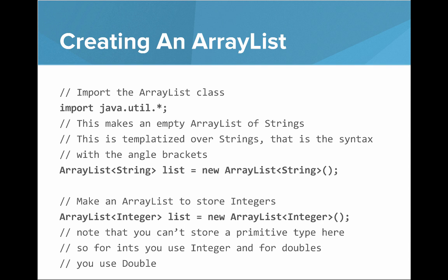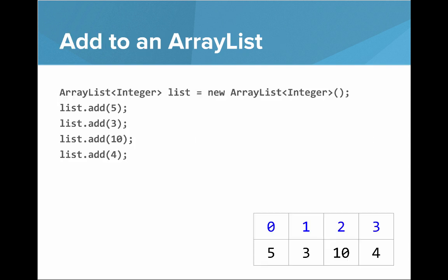You can't actually store a primitive type directly. So for ints you use capital Integer, for doubles you use capital Double. Behind the scenes, Java is handling the conversion between the object and the primitive, which is called unboxing and autoboxing, but we won't dive into that right now.